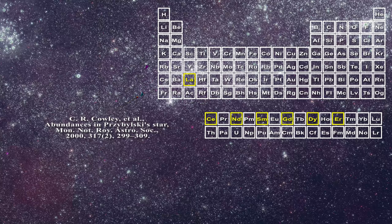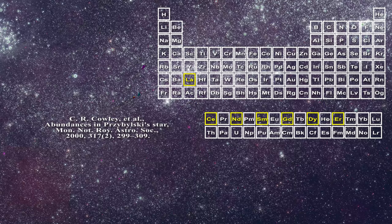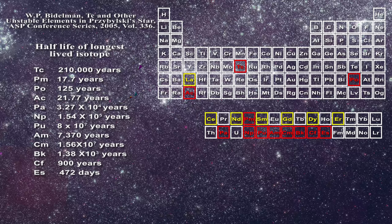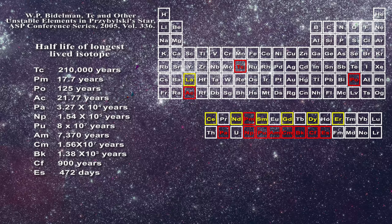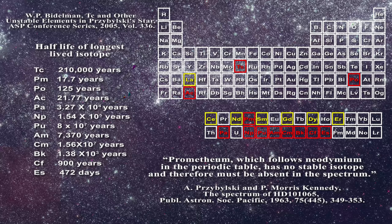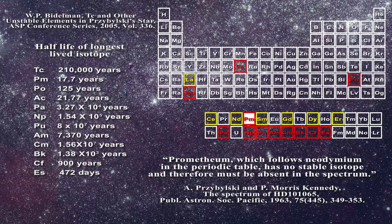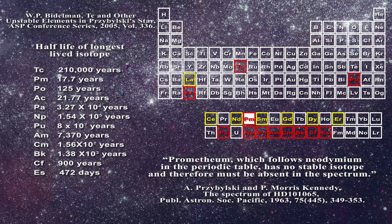William Bidelman found the clear presence of extremely heavy and unstable elements in the star as outlined in this paper. Here is a list of those elements along with the half-lives of the longest-lived isotopes for each. You will notice that Promethium is included, but in his second paper, Przybylzki had written, Promethium which follows neodymium in the periodic table has no stable isotope and therefore must be absent in the spectrum. Yet it was not absent, it really was there.